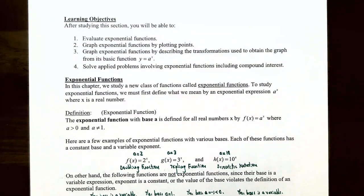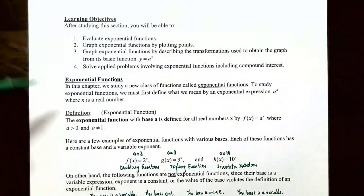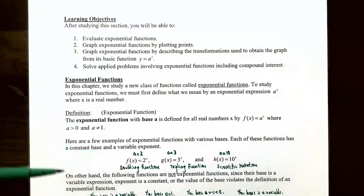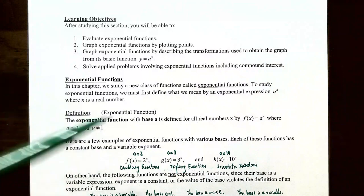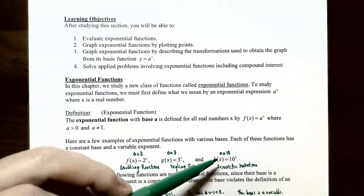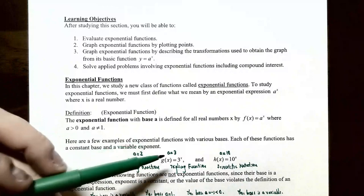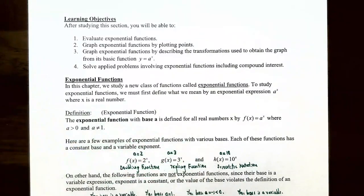Each exponential function has a constant base but a variable exponent. For example, f of x equals 2 to the x has base a equals 2, sometimes called the doubling function. g of x equals 3 to the x has base a equals 3, sometimes called the tripling function. And h of x equals 10 to the x has base a equals 10, which you might see with scientific notation and powers of ten.